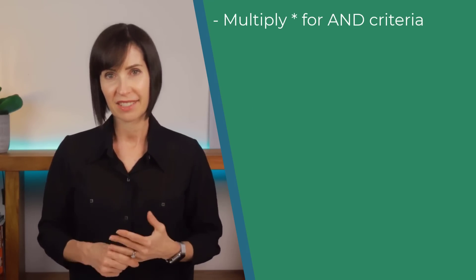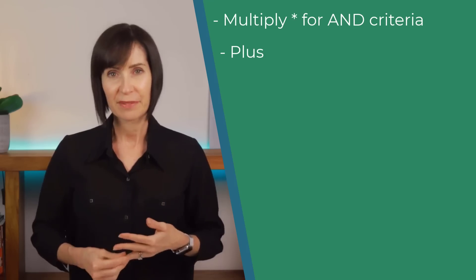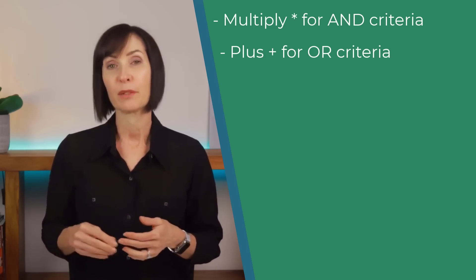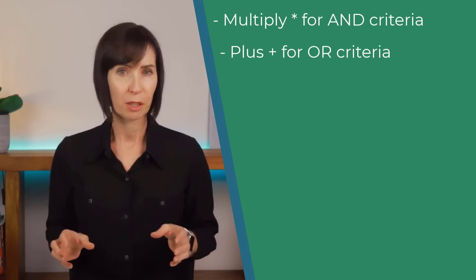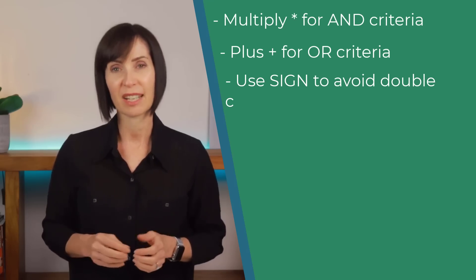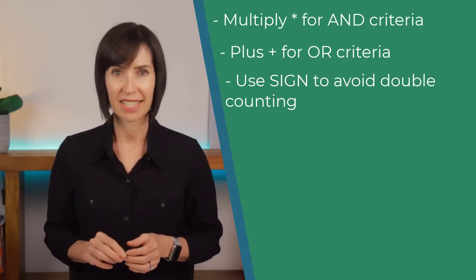Now that you know how to calculate a SUMIF and COUNTIF using SUMPRODUCT, your homework is to put them together to calculate the AVERAGEIF. You'll find an example in the file download for this video. To recap: use multiply between logical tests for AND criteria, use plus for OR criteria, and if the OR criteria reference different columns, wrap the logical tests in the SIGN function to avoid double counting.